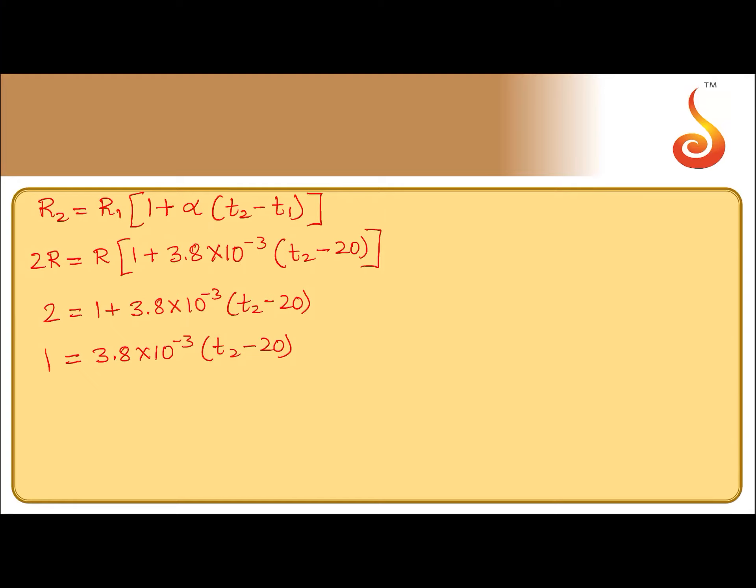Moving 3.8 × 10^-3 to the left-hand side, 1 divided by 3.8 × 10^-3 equals T2 - 20.